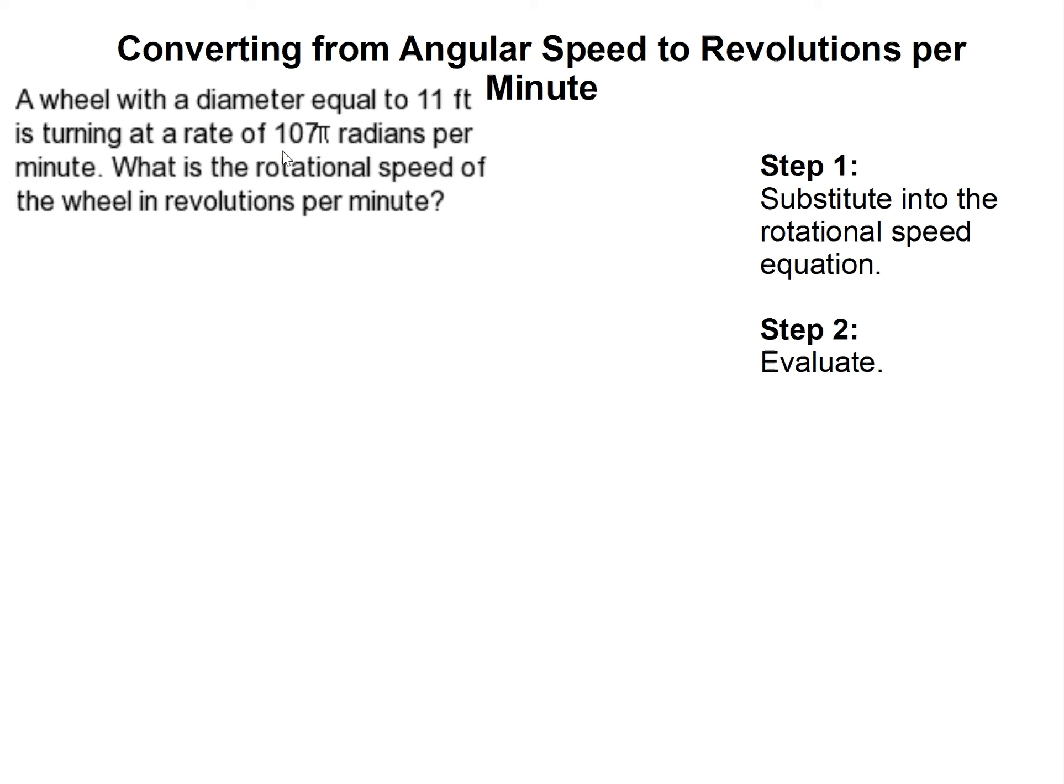How to convert from an angular speed to revolutions per minute. All right, so the first thing we need to do is read the problem. It says a wheel with a diameter equal to 11 feet is turning at a rate of 107π radians per minute. What is the rotational speed of the wheel in revolutions per minute?